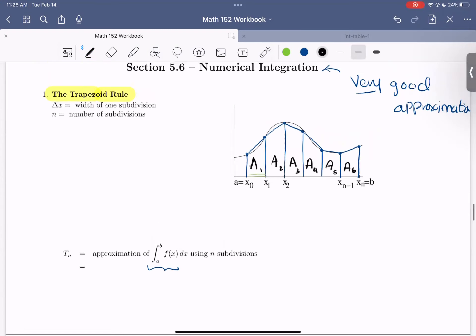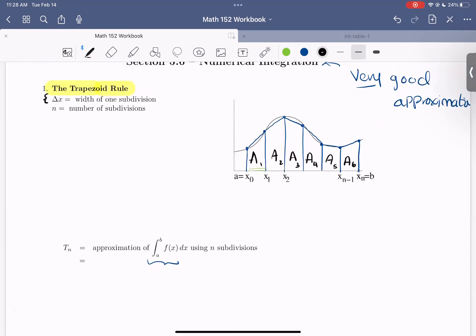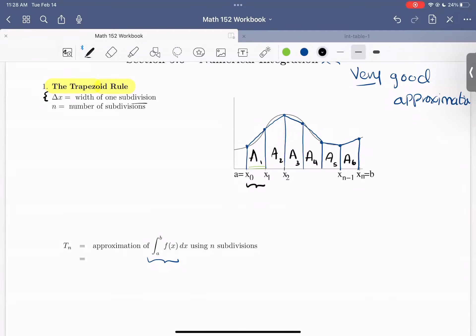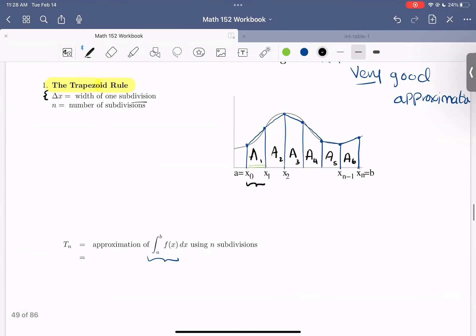So now we're given some notation. We're going to let delta X represent the change from one X in our subdivision to the next, which is also the width of one subdivision. And n be the number of subdivisions.